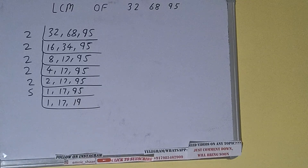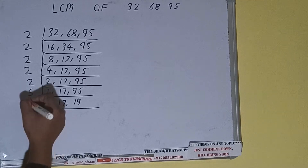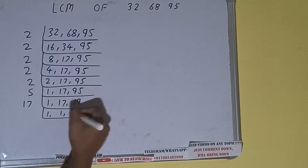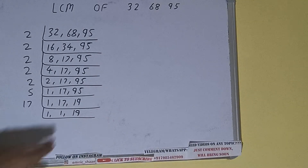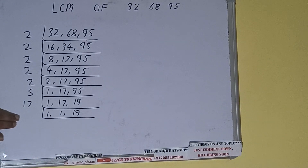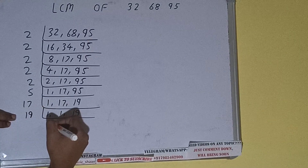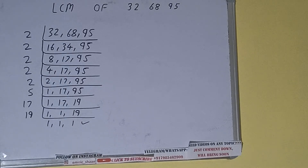Now if we check, none of the numbers are divisible by 5. We can see that 17 and 19 are both prime numbers. So first we'll divide all the numbers by 17: 1 remains 1, 17 becomes 1, and 19 remains 19. Again, 19 is only divisible by 19 since it is also a prime number, so we divide and we'll have all numbers as 1. Once we get that, we stop.